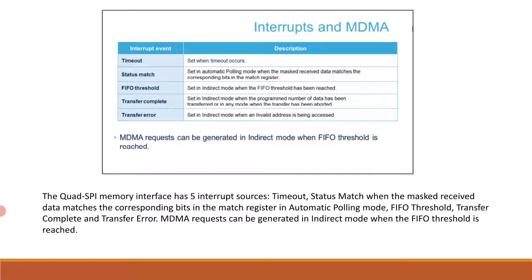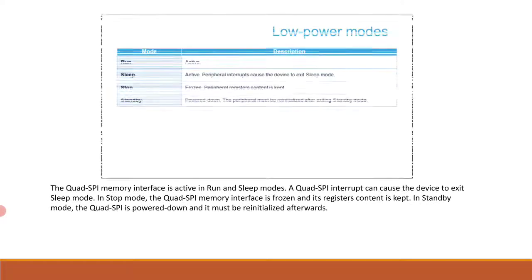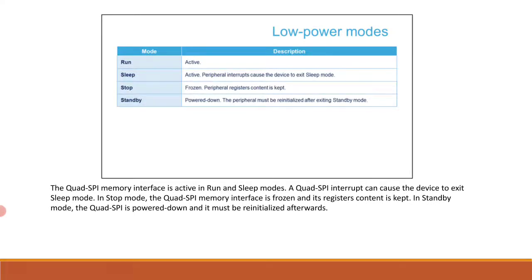In low power mode, the Quad SPI memory interface is active in run and sleep modes. A Quad SPI interrupt can cause the device to exit sleep mode. In stop mode, the Quad SPI interface is frozen and its register content is kept. In standby mode, the Quad SPI is powered down and must be re-initialized afterwards.